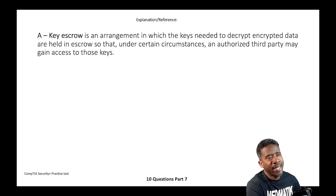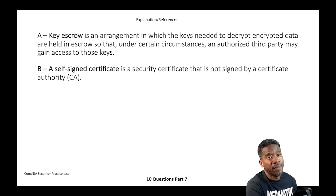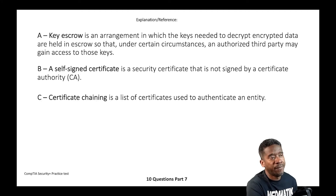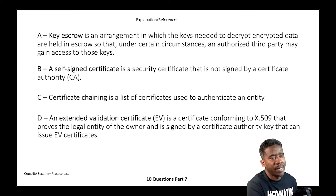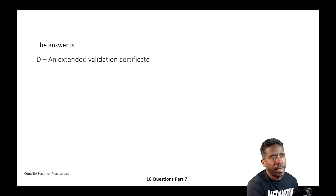Key escrow is an arrangement in which the keys needed to decrypt encrypted data are held in escrow, so that under certain circumstances an unauthorized third party may gain access to those keys. A self-signed certificate is not signed by a certificate authority. Certificate chaining is a list of certificates used to authenticate an entity. An extended validation certificate confirms to x.509 and proves the legal entity of the owner, signed by a certificate authority. The answer is D, extended validation certificate.